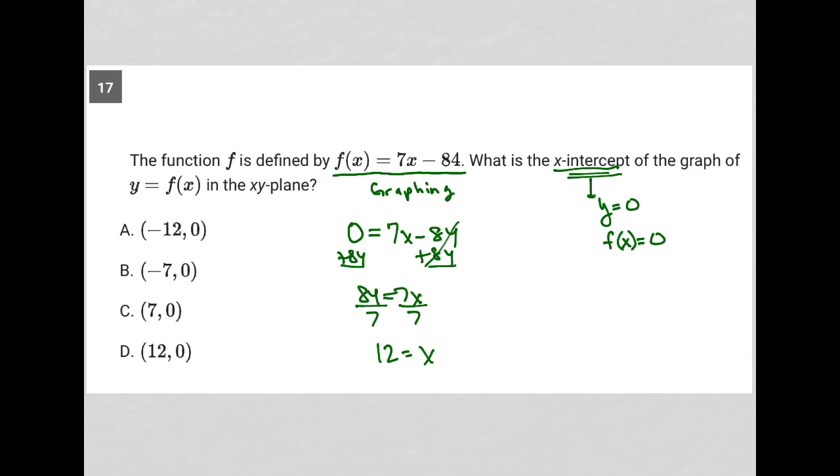So 12 equals the x-value of the x-intercept, and therefore choice D is the correct answer.